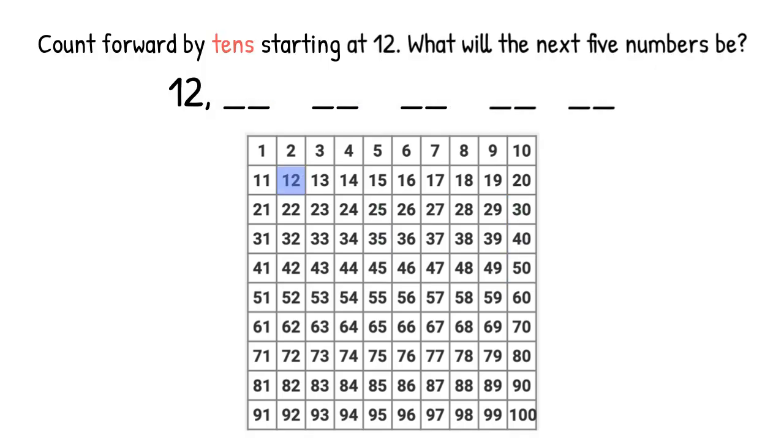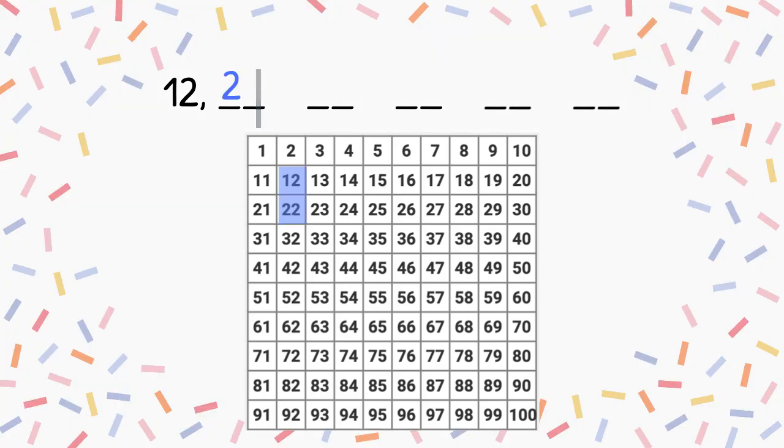Count forward by tens, starting at 12. What will the next five numbers be? If you said 22, 32, 42, 52, 62, you are correct. Awesome!